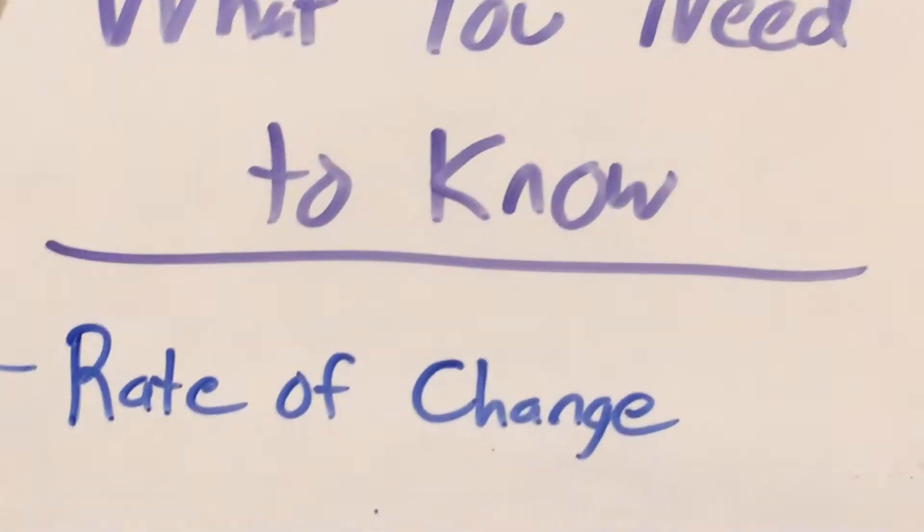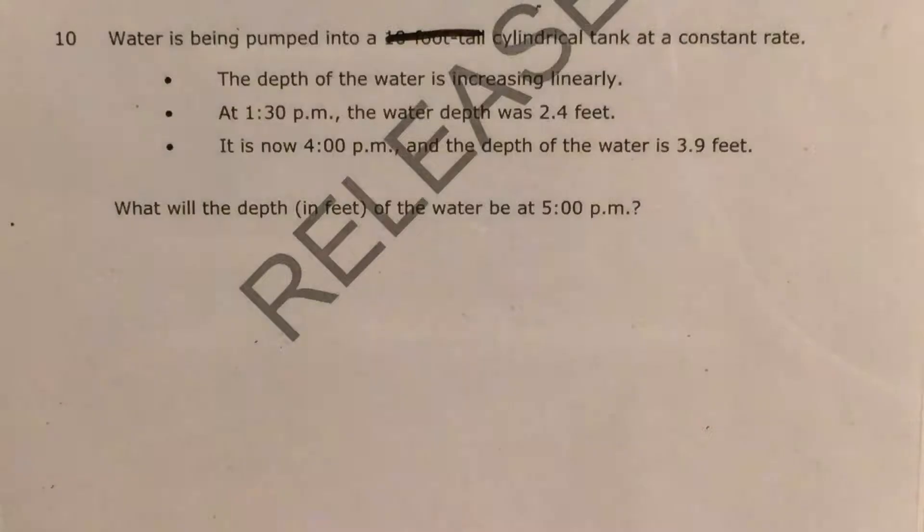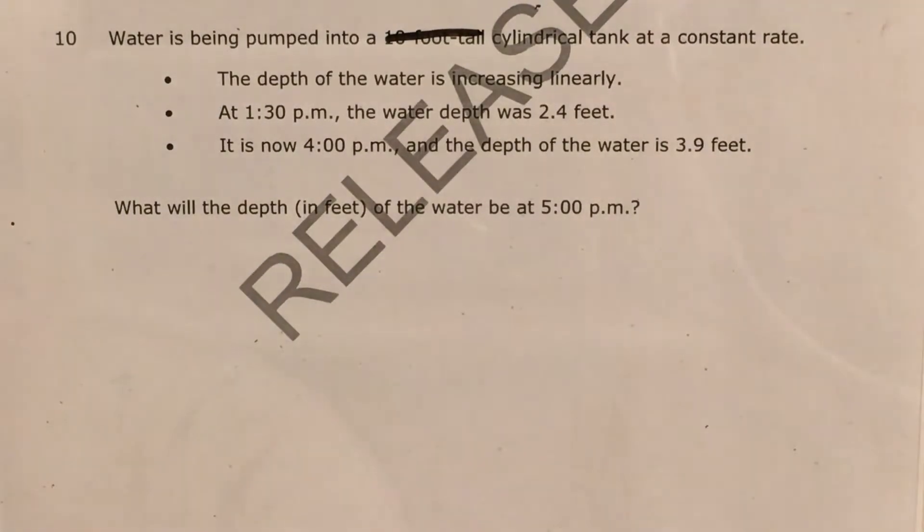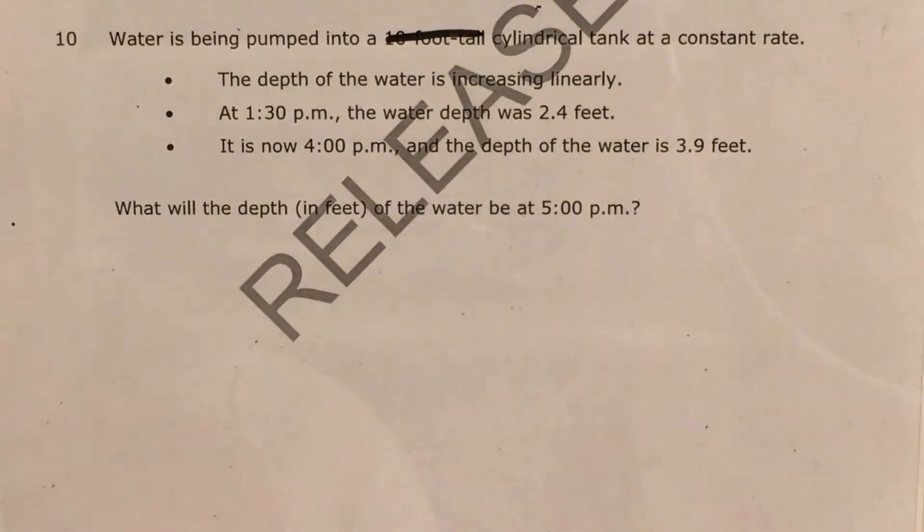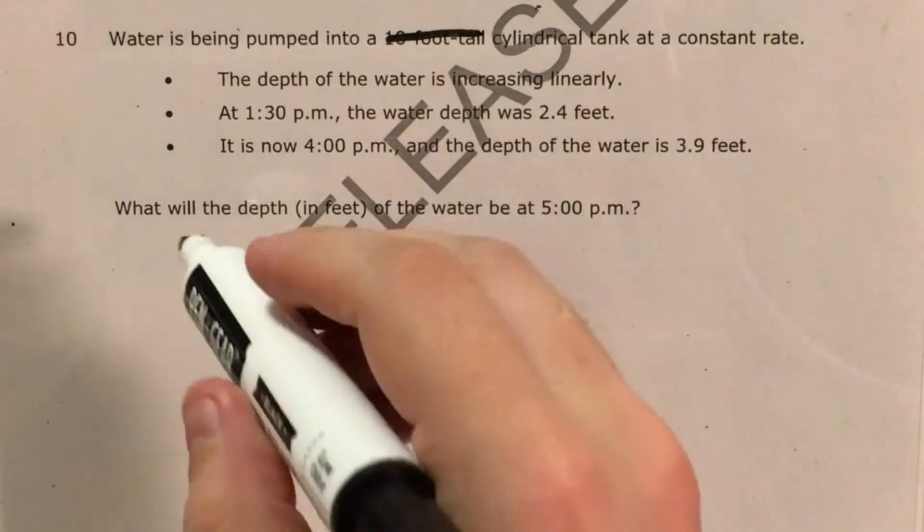So let's go ahead and talk about what exactly that means. Now rate of change is another way of saying slope. I'm using rate of change in this problem because we're actually going to have to find the rate at which our water depth is changing.